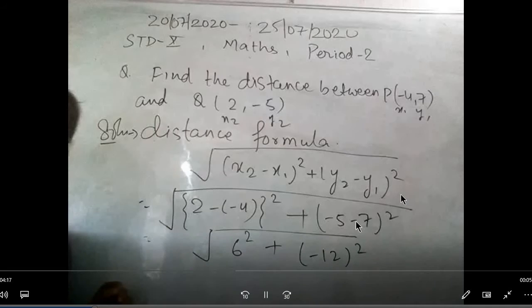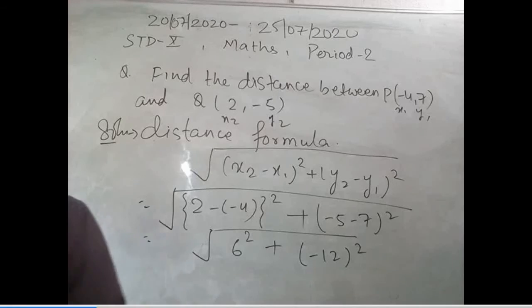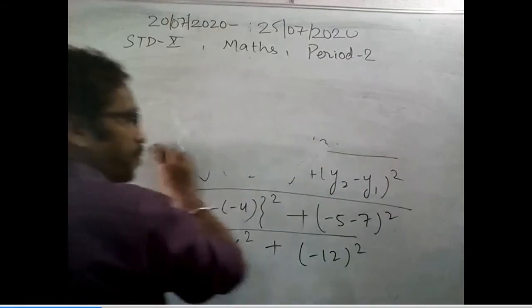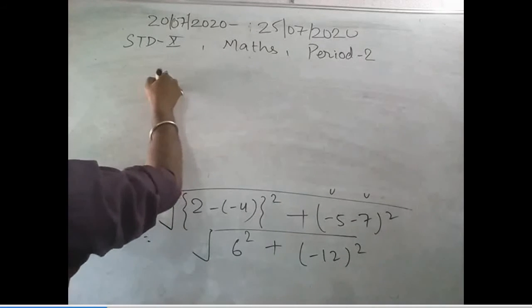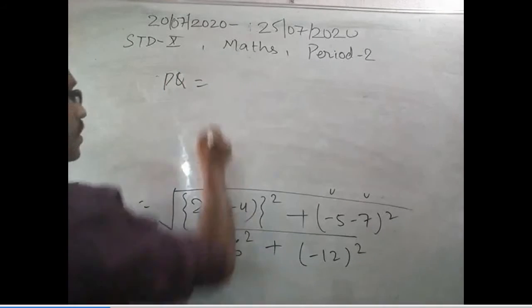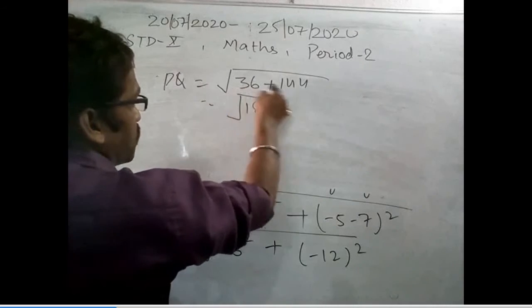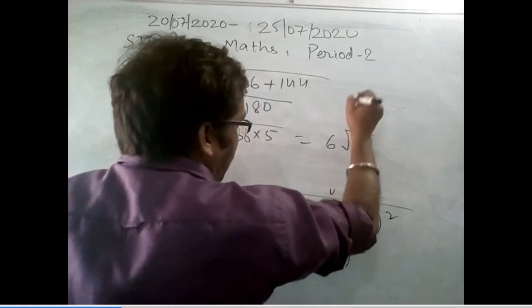y2 minus y1: this minus is here, and y1 is 7. So y minus 7, y2 is minus, so I have written minus 5. So I will add this. I will remove this small bracket. It will become 2 plus 4, that is 6. Now, simply one calculation and we can find the distance. That is equal to 36 plus 144, that is 180. And 180 can be written as 36 into 5. 36 is a perfect square, so 6 will come outside. This will become 6 root 5 units.